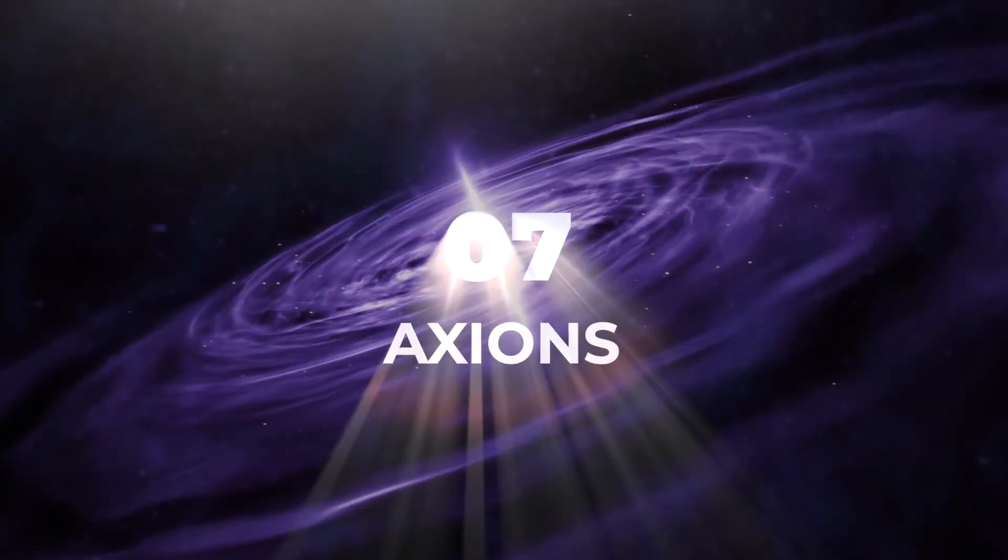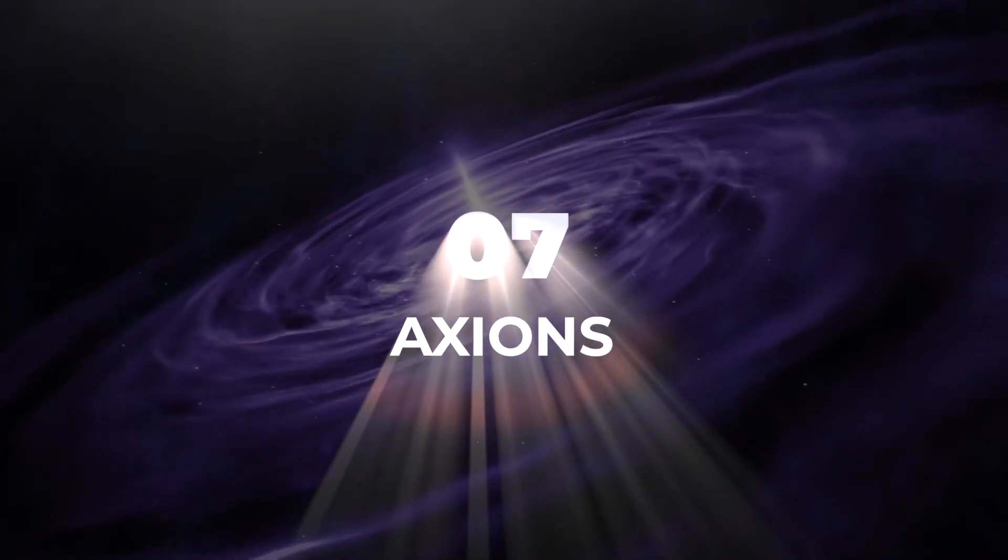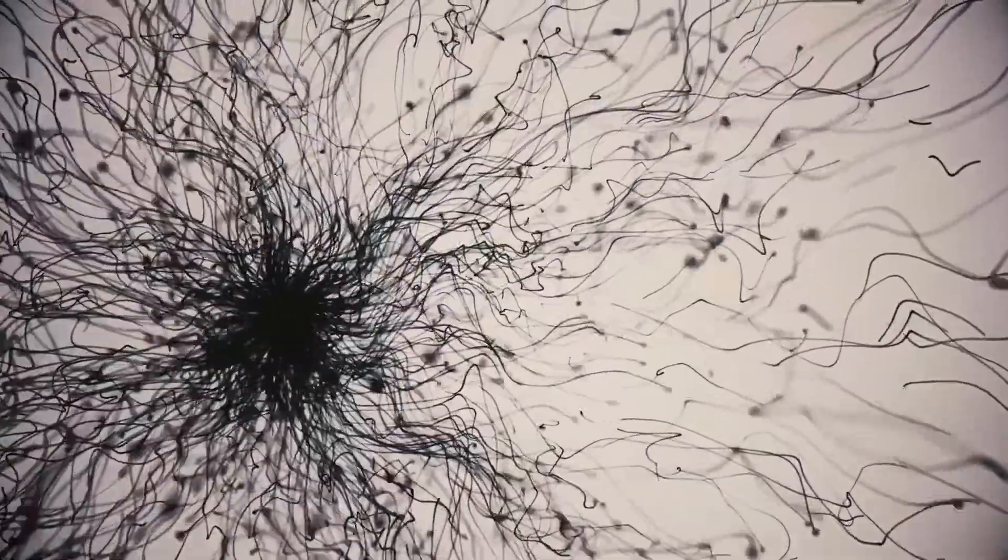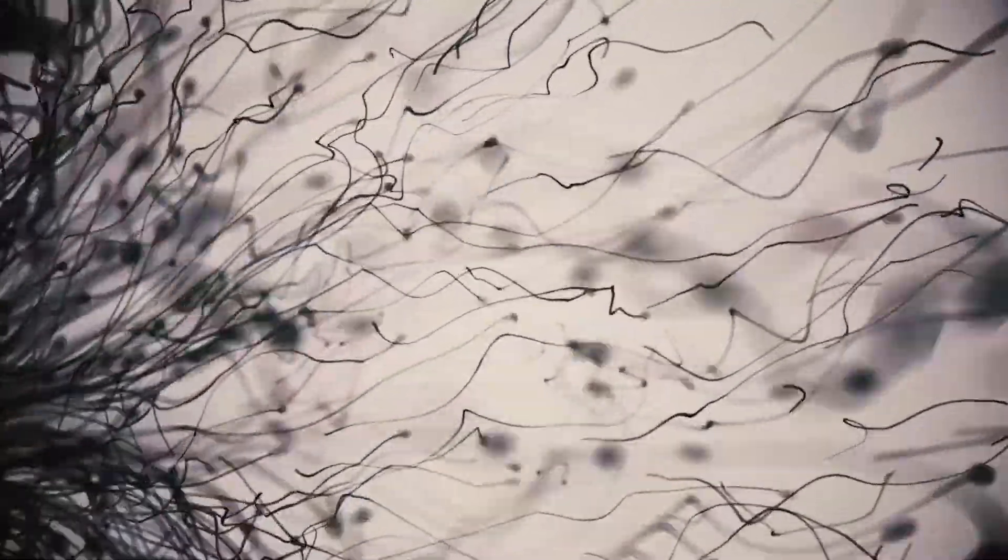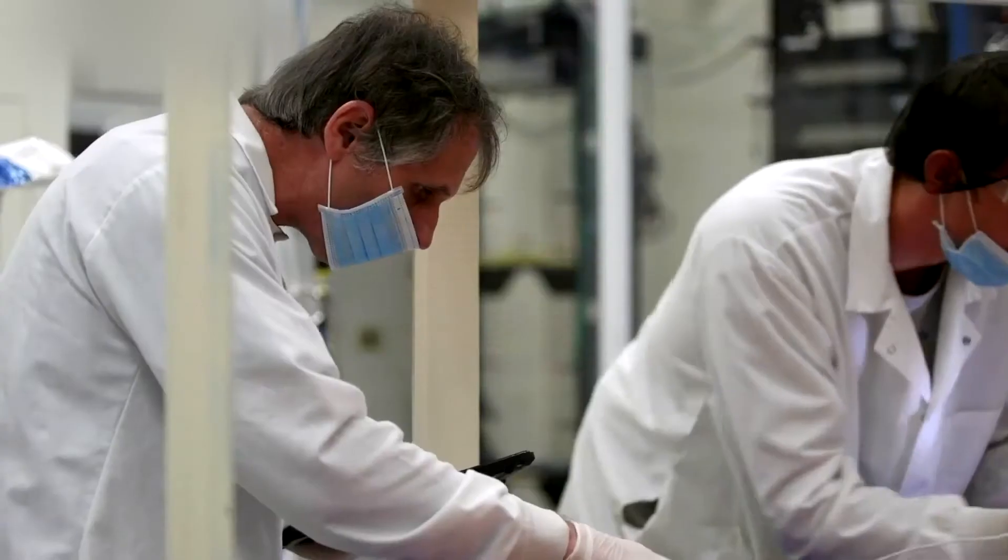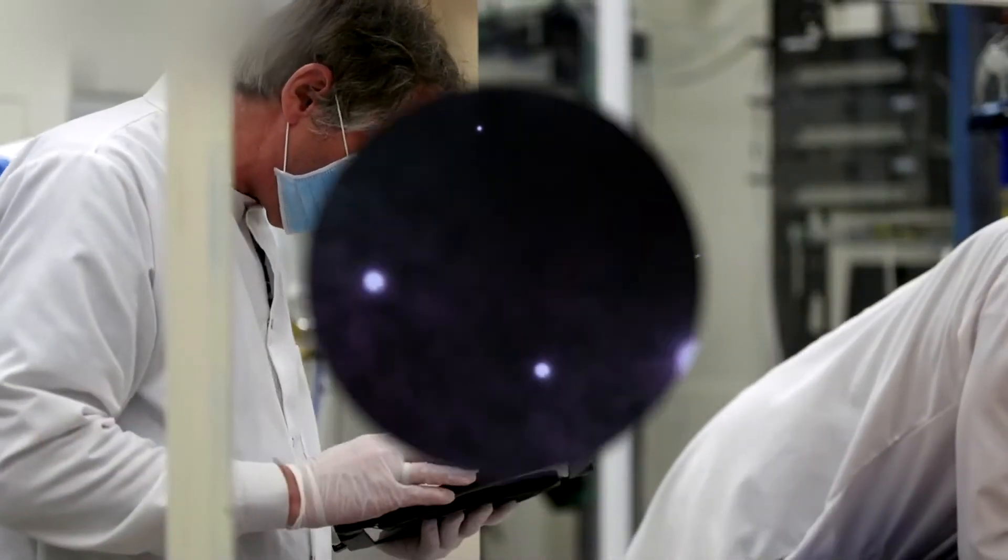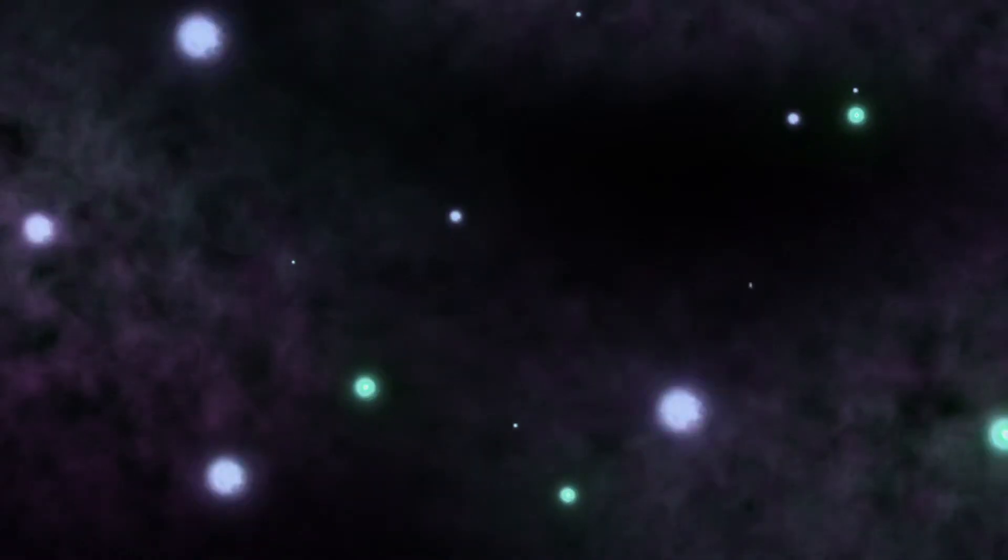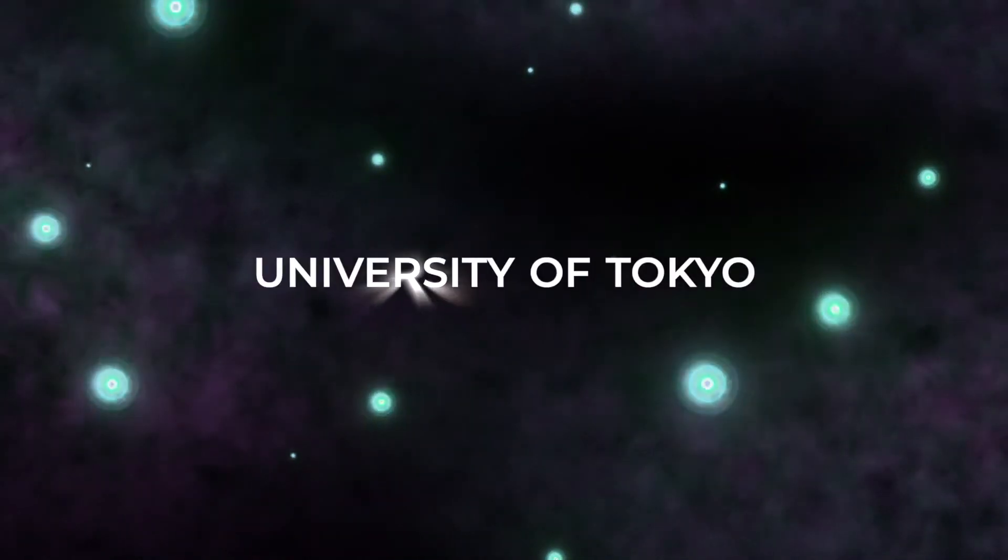Number 7. A possible contender for what dark matter is: the Axion. Over the years, there have been many possibilities for what dark matter is made up of. One particular particle that has been at the top of the list for some time, the Axion, may have been detected by a team at the University of Tokyo.